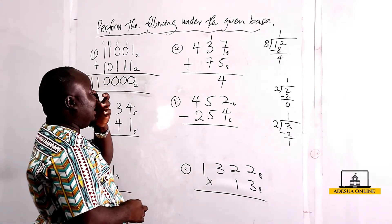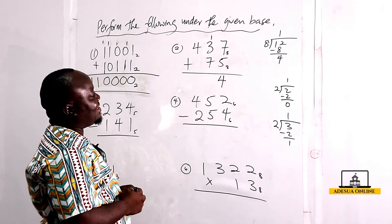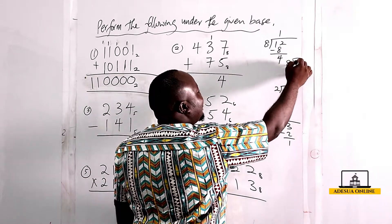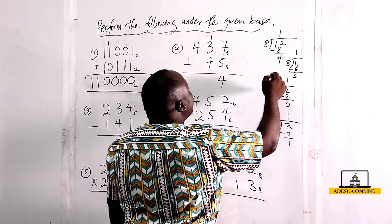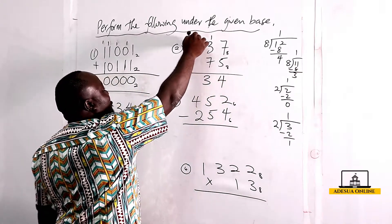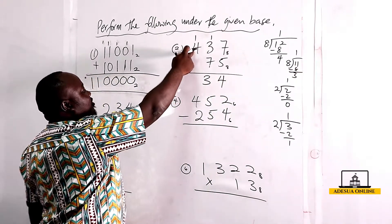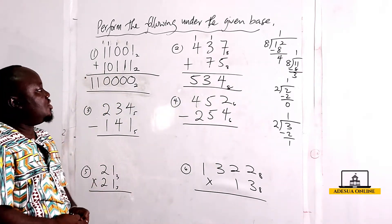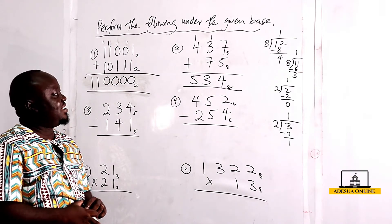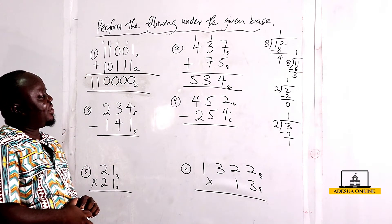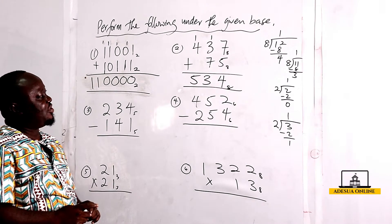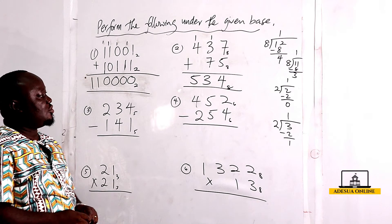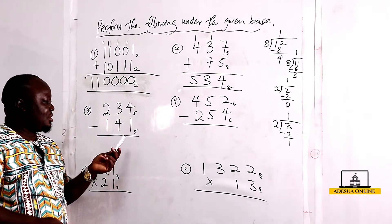One plus three is four, plus seven is eleven. Eleven in base eight: eight divided into eleven once, eleven minus eight gives three, so we have three carry one. Then one plus four is five. So the result is 534 to the base eight. That is 437 base eight plus 75 base eight equals 534 to the base eight.